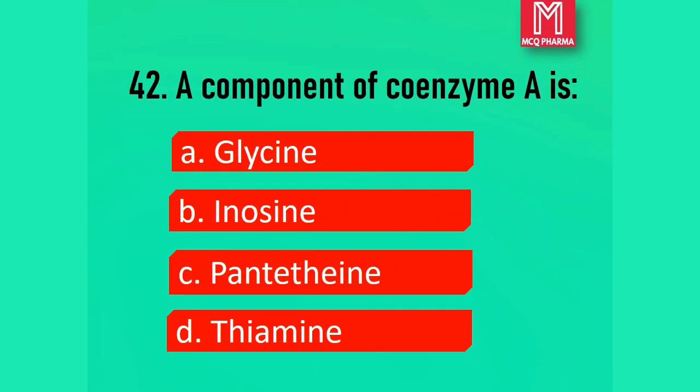Question number 42. A component of coenzyme A is: Option A, Glycine. Option B, Inosine. Option C, Pantethine. Option D, Thiamine. Correct answer: Option C, Pantethine. Pantethine is an intermediate in the production of coenzyme A by the body.